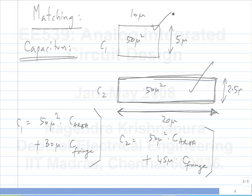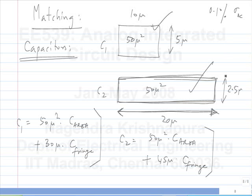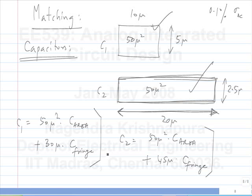Systematic error means you know the cause and can easily avoid it. It arises because you designed the two components differently, causing a definite error in value. So if you want two identical capacitors, do not use different geometries — make both the same shape, whichever is convenient for layout. It is important to size the area large enough so random mismatch is acceptable, but also to avoid systematic errors. Even if 50 µm² gives you 0.1% sigma_ΔC, making the two capacitors with different shapes introduces a systematic error that makes the whole thing pointless.